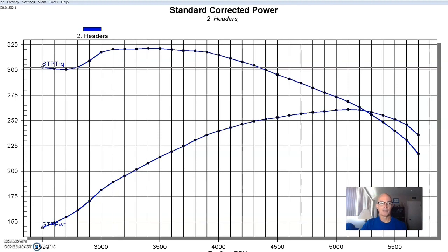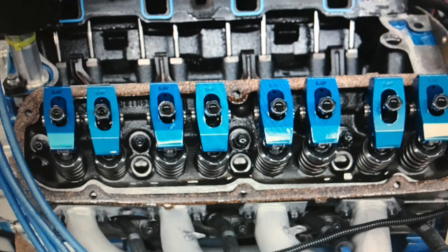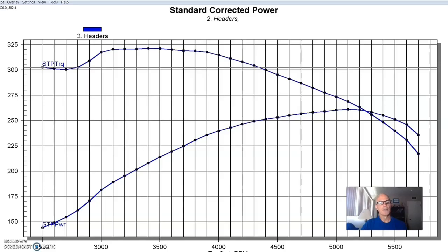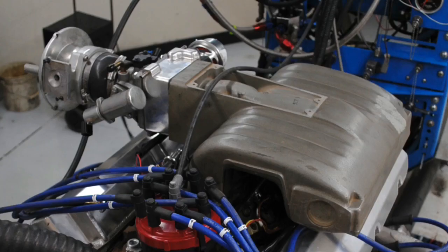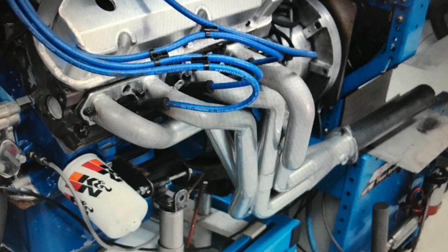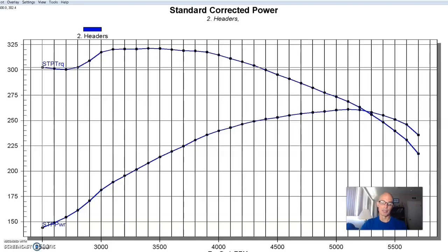It did have a valve spring upgrade on it because we were going to put cams on the stock heads. This thing had the stock HO intake, the stock throttle body. It did have long tube headers on it. Basically, it was a stock 5-liter with headers on it.